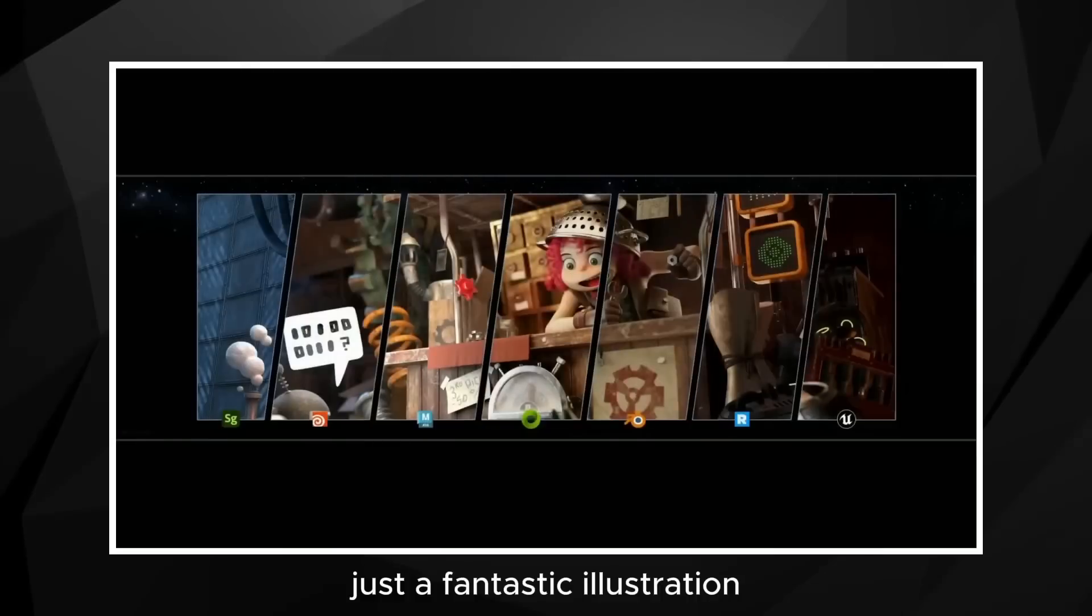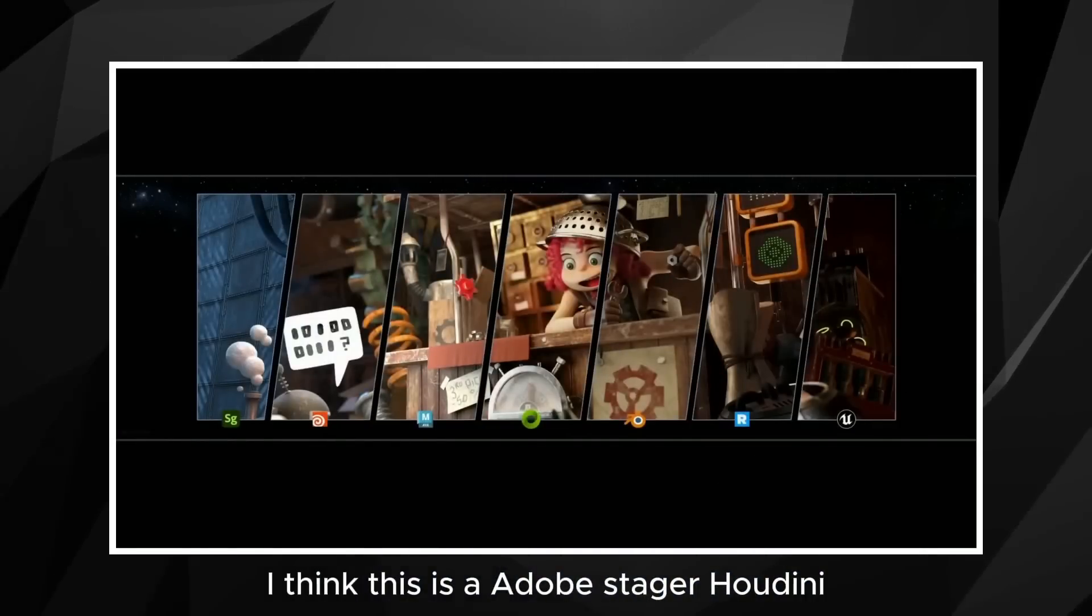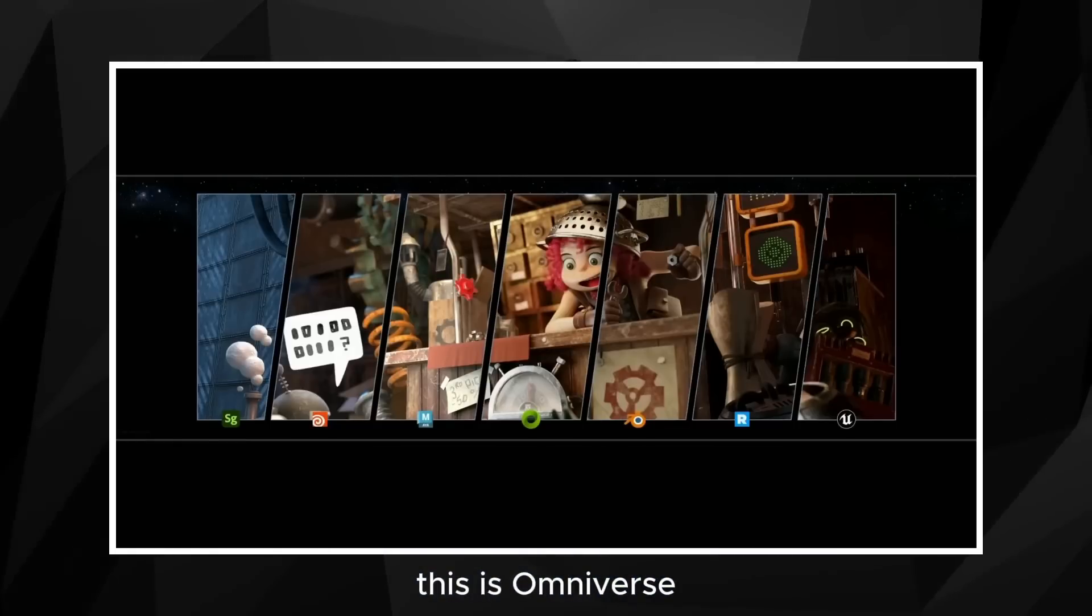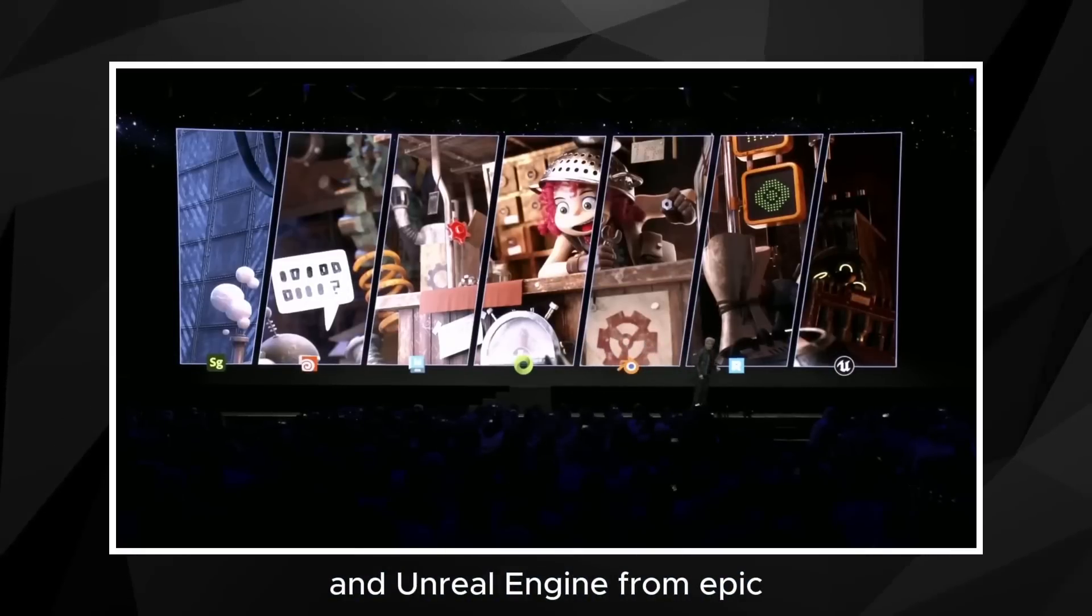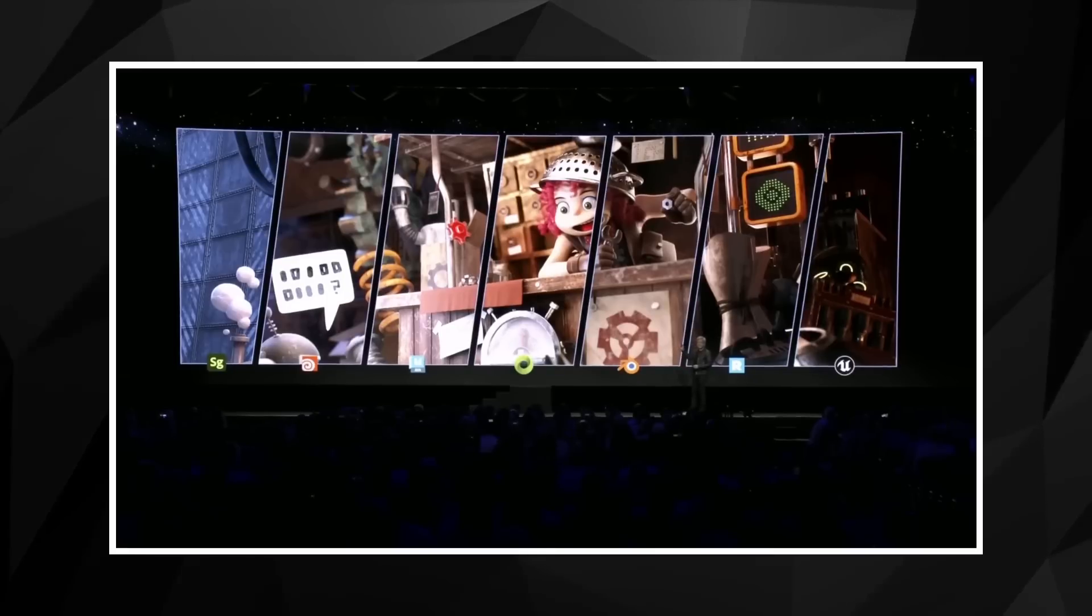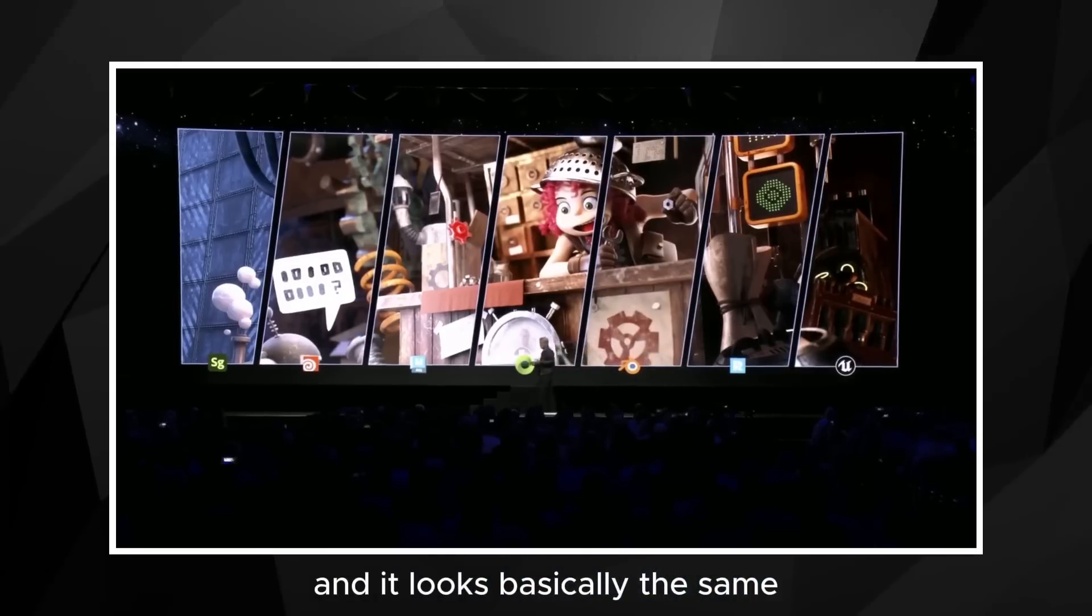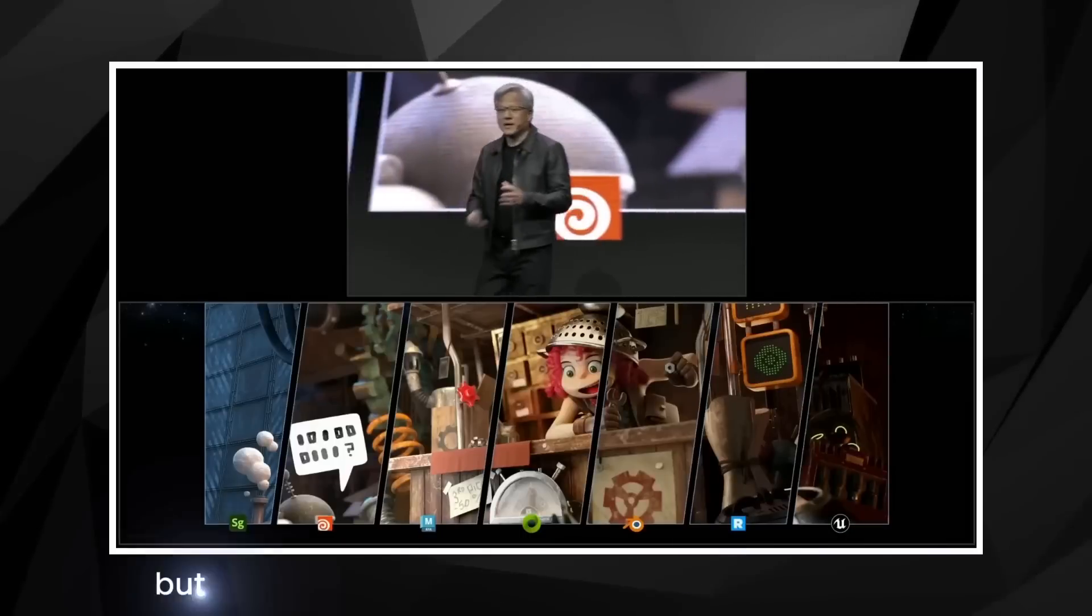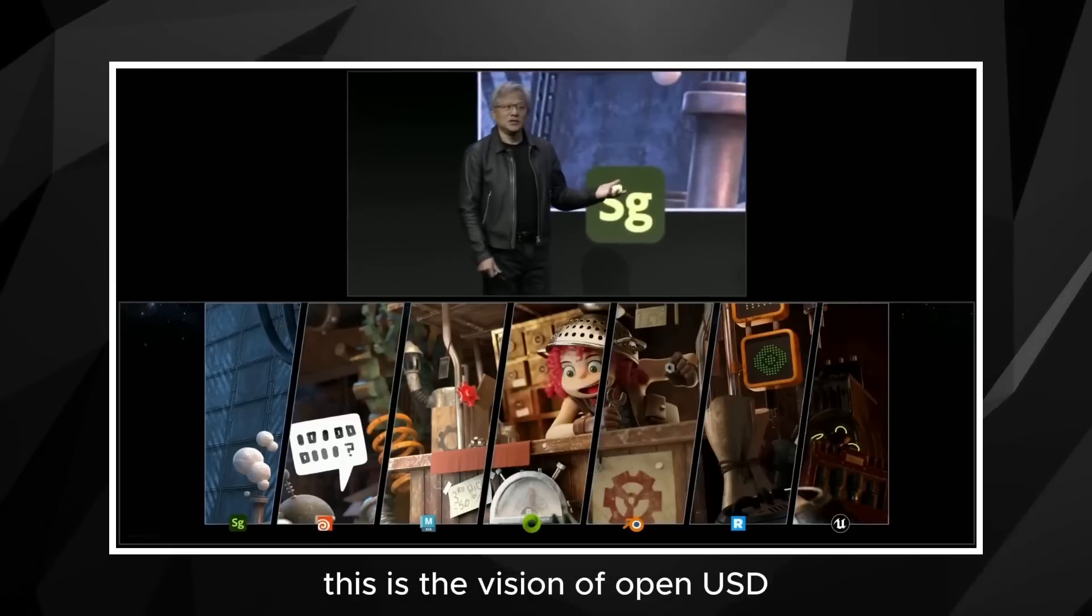Starting from the left here, I think this is Adobe Stager, Houdini, this is a modeling system, Maya, or animation system, modeling system. This is Omniverse, Blender, RenderMan, Pixar's RenderMan, and Unreal Engine from Epic, a game engine. Literally all OpenUSD. One dataset ingested into everybody's tools and it looks basically the same. Everybody's rendering system is a little different and so the quality of the rendering is a little different from tool to tool, but one dataset available and usable by every tool. This is the vision of OpenUSD. No art, all physics.